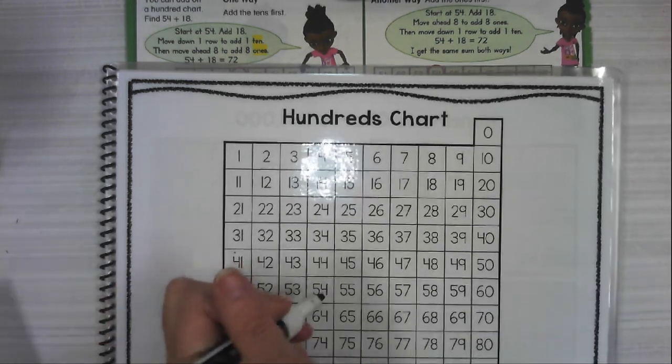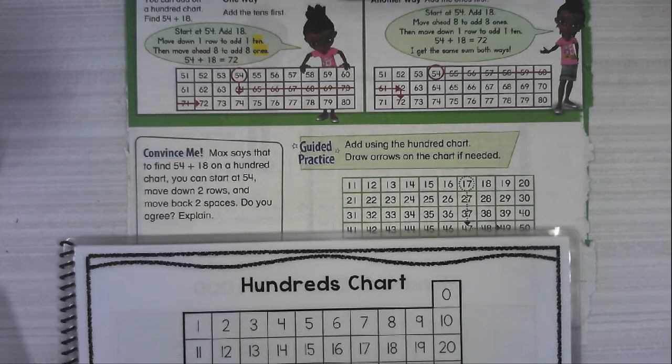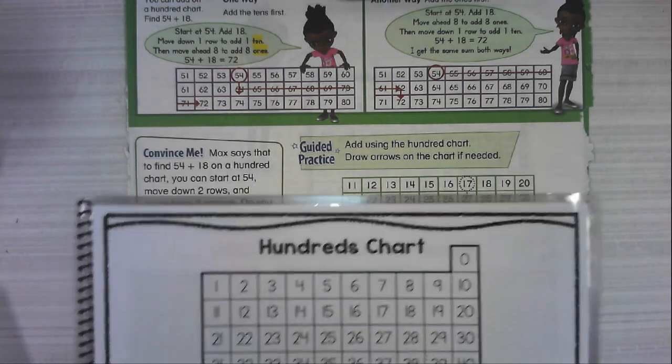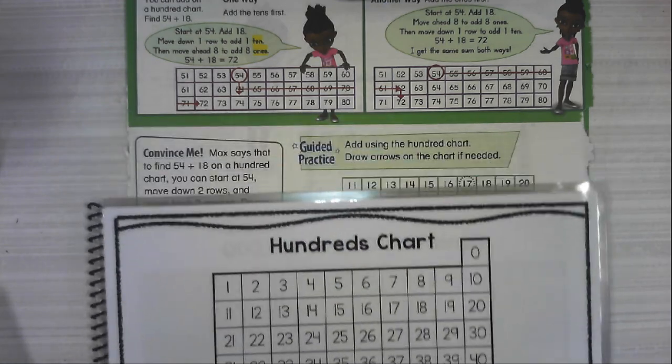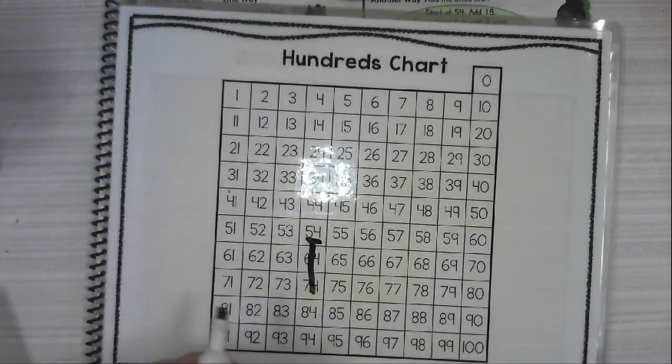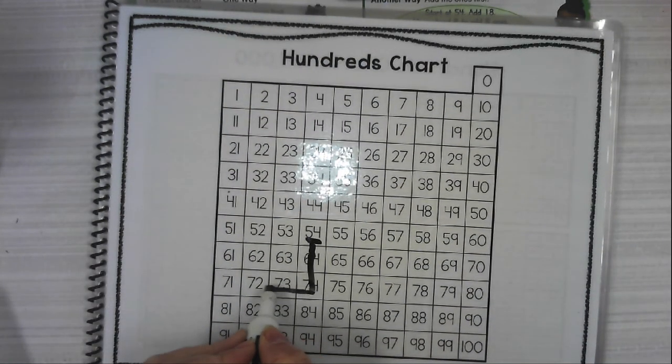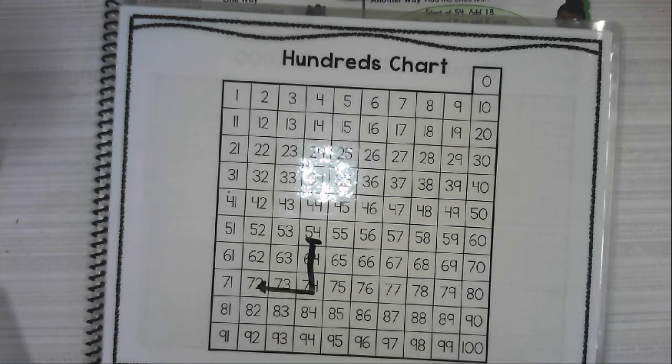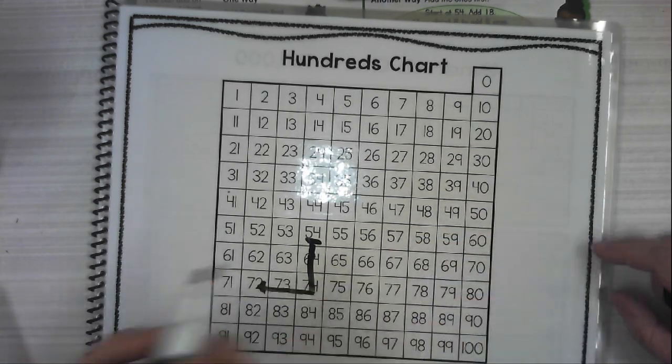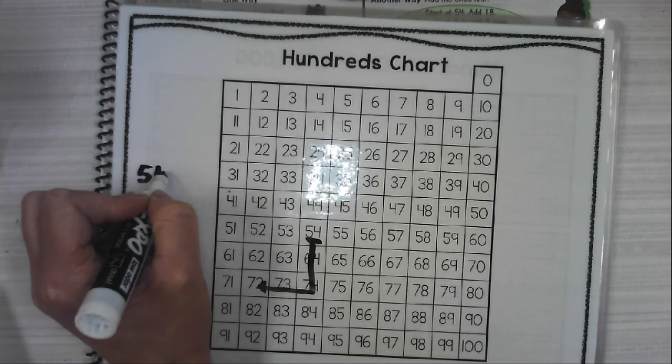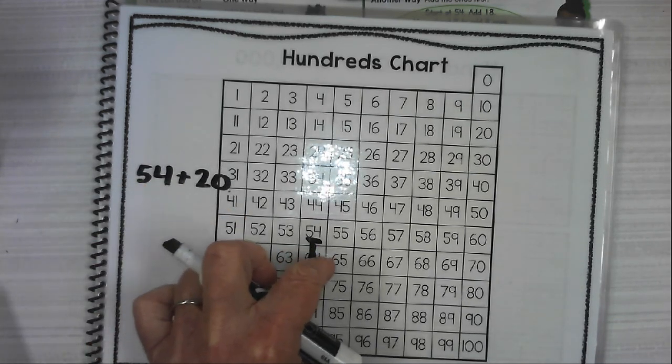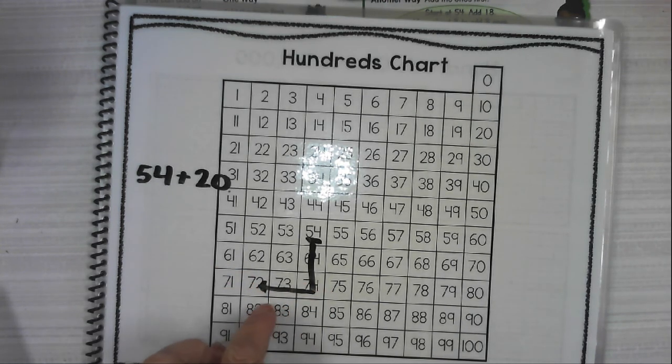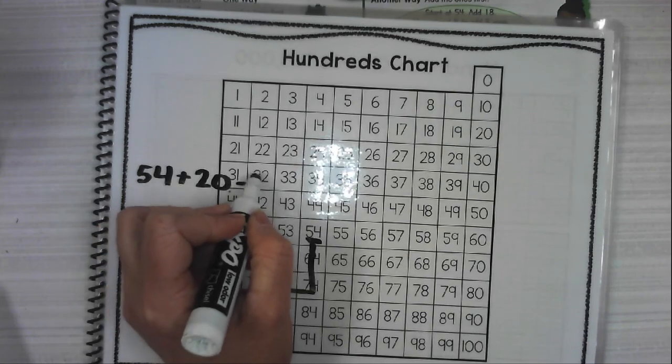So if Max starts at 54, alright, here we go. Max starts at 54 and he moves down two rows, doink, doink, to 74, and then moves back backwards two spaces. Would you agree that he did 54 plus 20, 10, 20, and then what are we doing when we go backwards? That's subtraction.